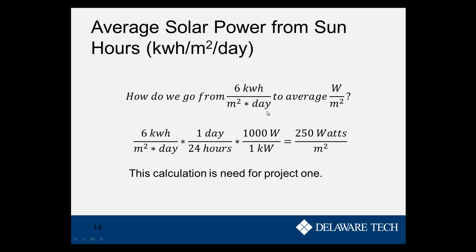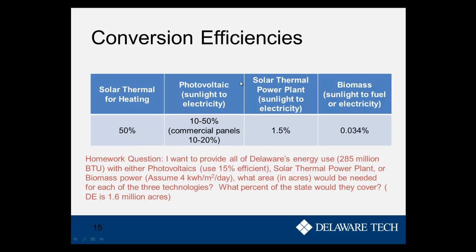Using these kilowatt hours per meter squared per day units, we can make sense of conversion efficiencies. The homework question asks: to provide all of Delaware's energy use with either 15%-efficient photovoltaics, solar thermal power plants, or biomass power — assuming 4 kWh/m²/day — what area in acres would be needed for each technology? You also want to calculate what percentage of Delaware's 1.6 million acres each area would cover. The least efficient technology will require the highest area.